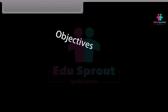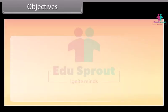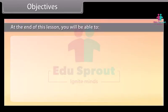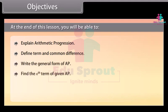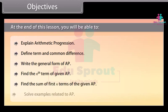Objectives. At the end of this lesson, you'll be able to: explain arithmetic progression; define term and common difference; write the general form of AP; find the nth term of given AP; find the sum of first n terms of the given AP; and solve examples related to AP.